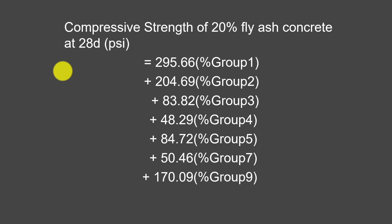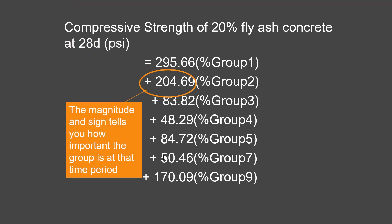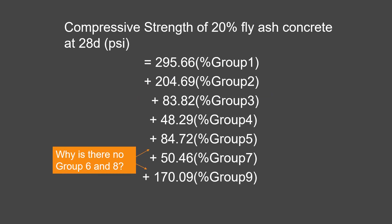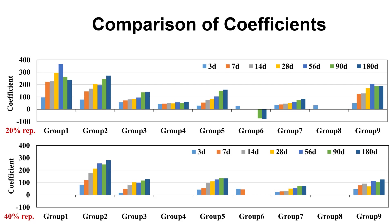How this works is we develop equations that look something like this. This predicts the property at a certain day. There is the magnitude — this tells us how important that group is at that period in time. And by multiplying these two together, the coefficient times the percentage of the group, that tells you the contribution to that property. Now, why is there no group six and eight? Not every group contributes — some of the groups do almost nothing. Here's a big comparison of all these coefficients: 20% replacement up here at the top, 40% replacement down here at the bottom, and the different days as they go up. Some of these contribute and go up and up, and some don't do very much over time.